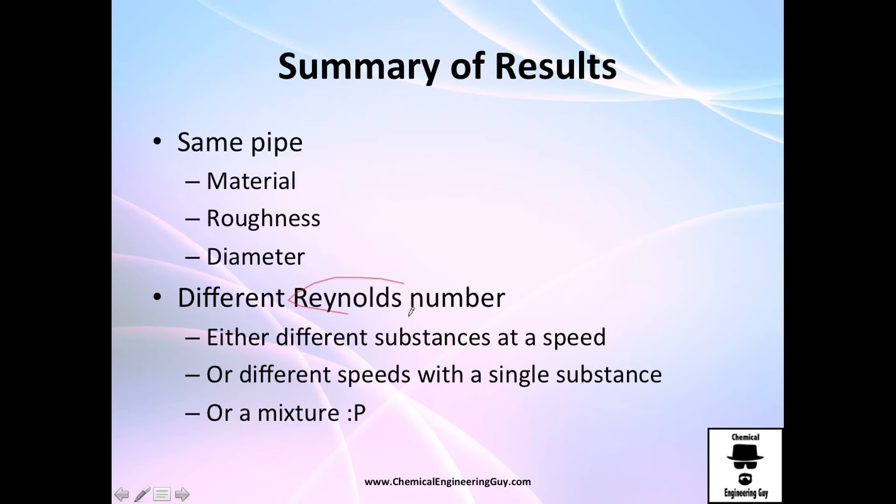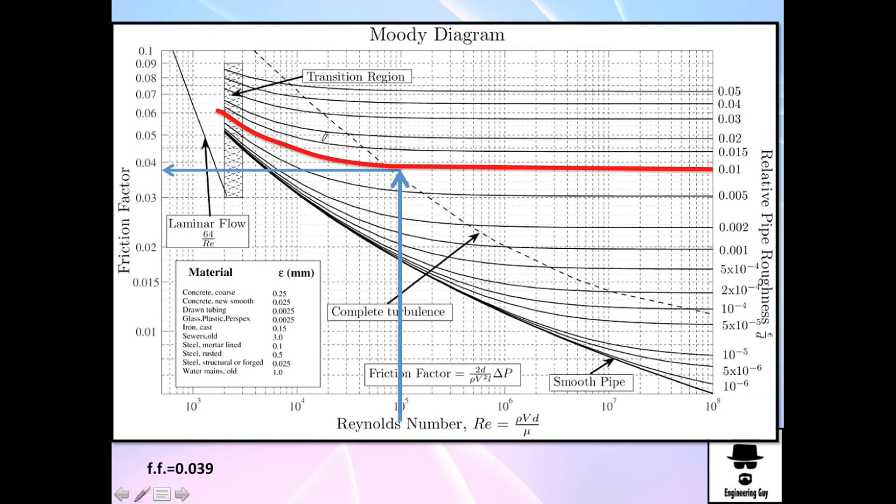When we change the Reynolds number, you can see at low Reynolds number, you will have higher friction factor. At very high Reynolds number, you will have about 0.039 versus this number 0.05.